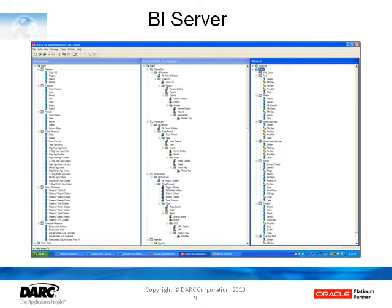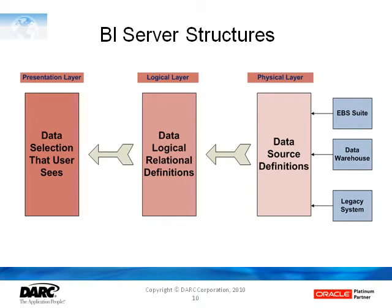The power of the BI server architecture is to divide data, in the general sense, into these layers, and that's where you have tremendous flexibility in how you build them. At the physical layer — the lowest layer — you're defining your data sources. The data source can be anything from the EBS suite applications, to a data warehouse, to any legacy system, or even to spreadsheet data. The BI server really doesn't care as long as the source and field names can be defined.